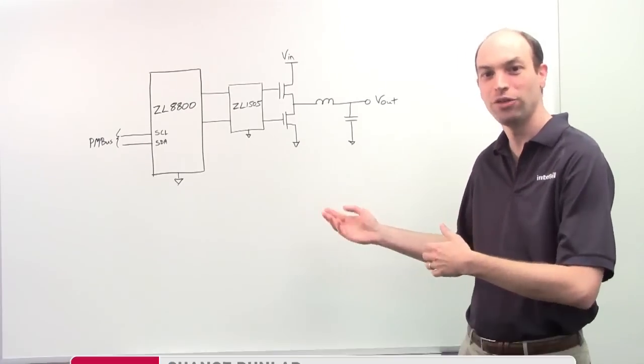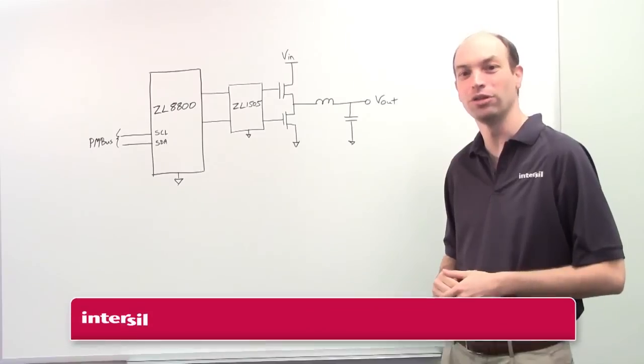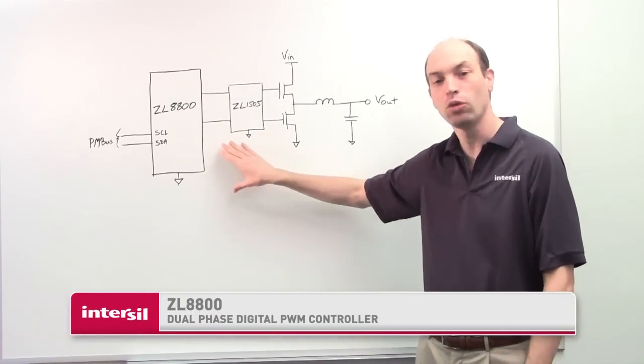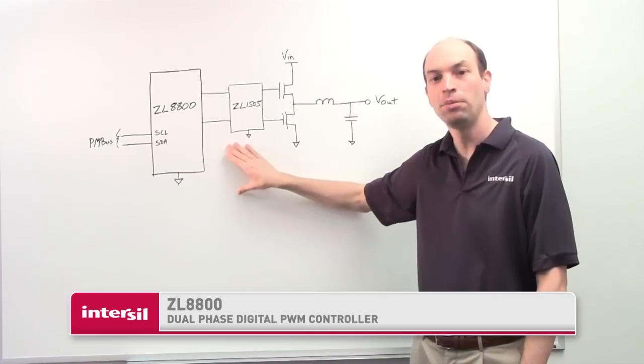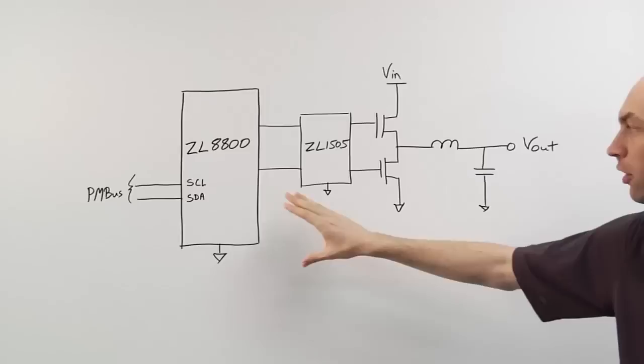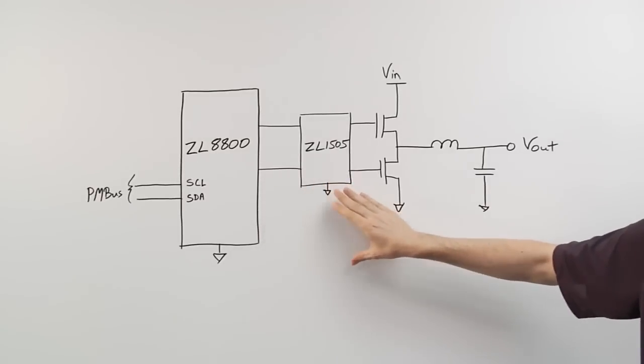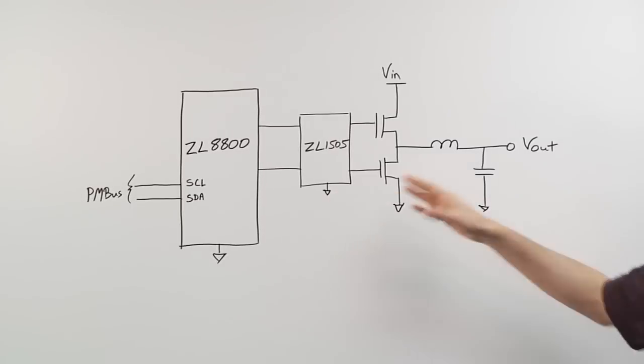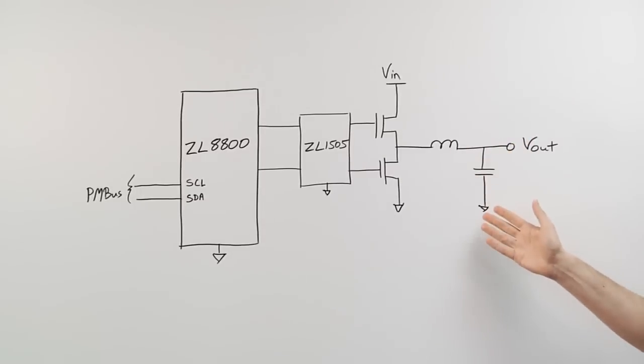And today I'd like to showcase the new Zio 8800. This device is a dual phase or dual output PWM controller. We're showing one output with it right now, the Zio 8800 device with an external Zio 1505 gate driver, and of course it's a synchronous buck controller.